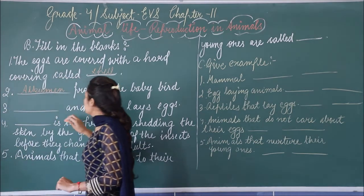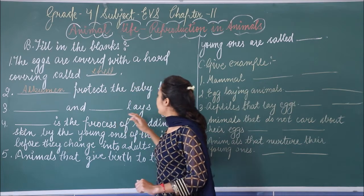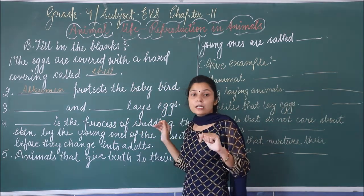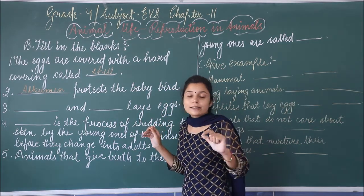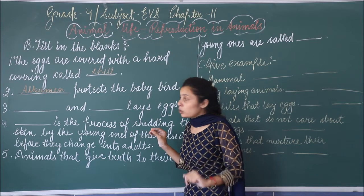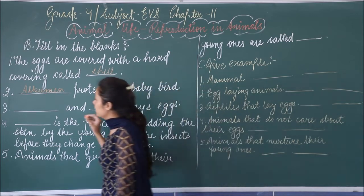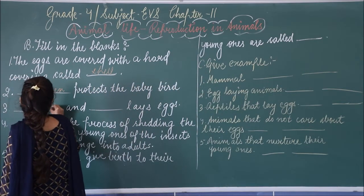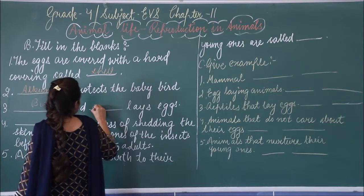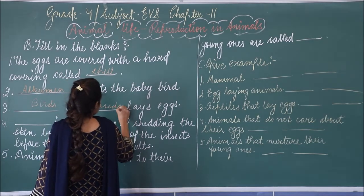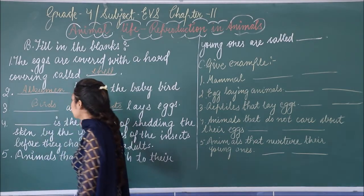Third: dash and dash lay eggs — aapko do examples dene hai jo ki eggs lay karte hain. Birds lay eggs and insects also lay eggs.